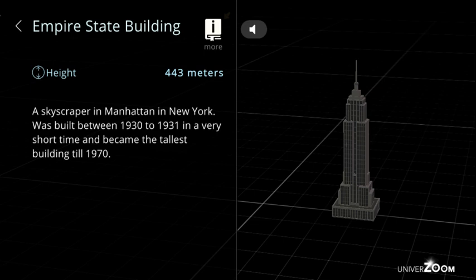Empire State Building, height: 443 meters. A skyscraper in Manhattan in New York. Was built between 1930 to 1931 in a very short time and became the tallest building till 1970.